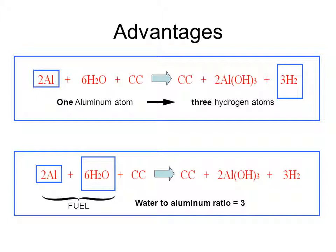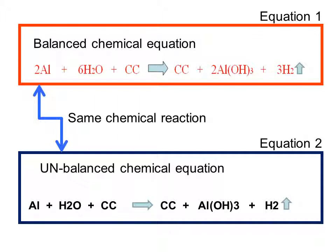At the top is a balanced chemical equation. A balanced chemical equation accounts for every single atom in every single molecule in the reaction of interest. The same chemical reaction is described below in equation two, that's called an unbalanced chemical equation.